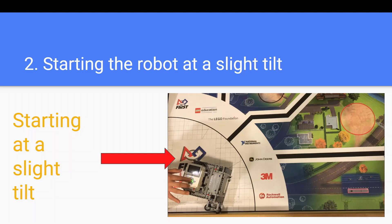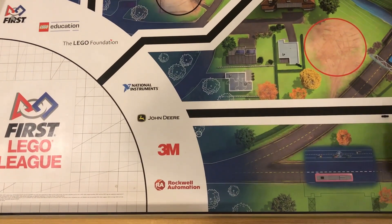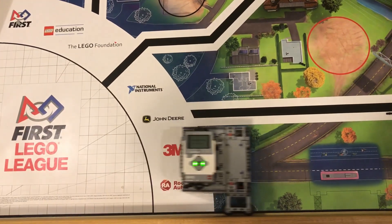Second, you can start your robot at a slight tilt towards the wall. This will help you make sure that the robot is clinging to the wall when the program begins. As you can see, as the robot moves forward, it will straighten itself out and stick to the wall better.